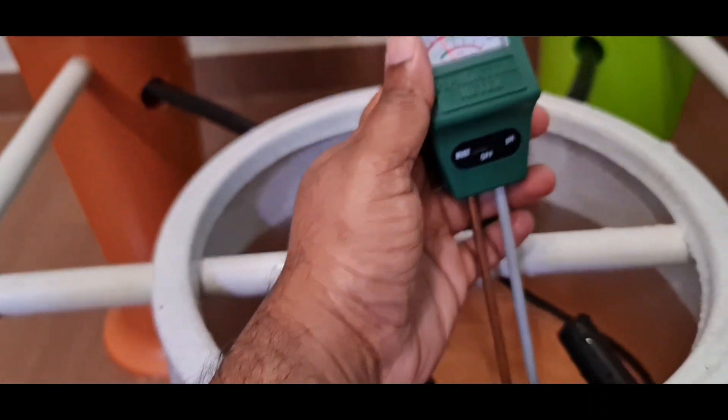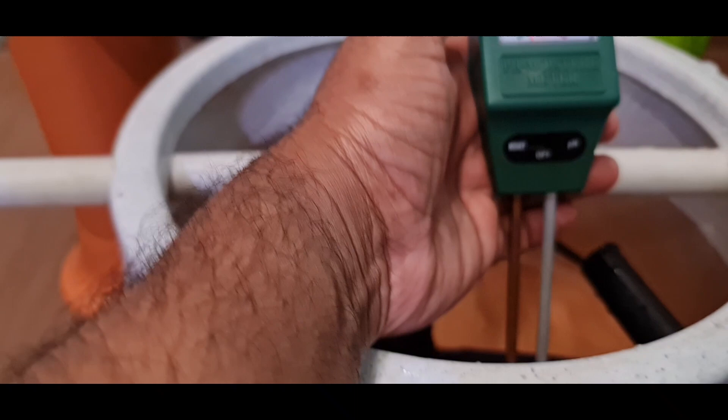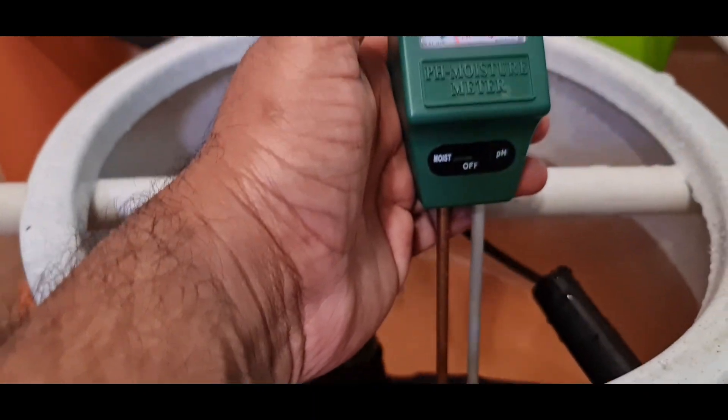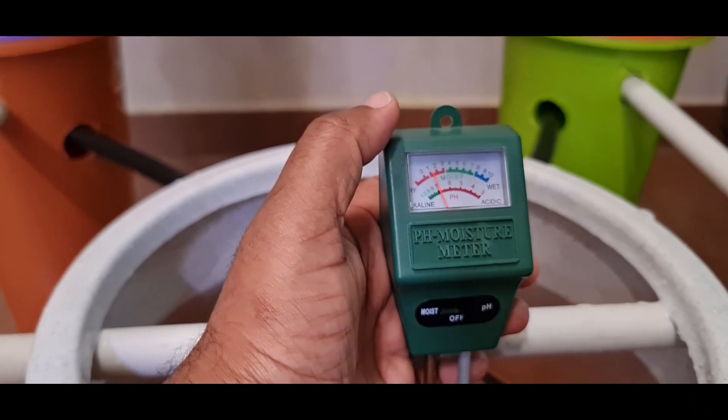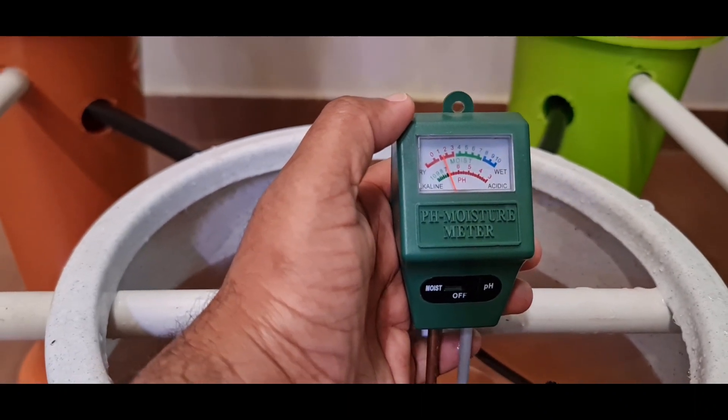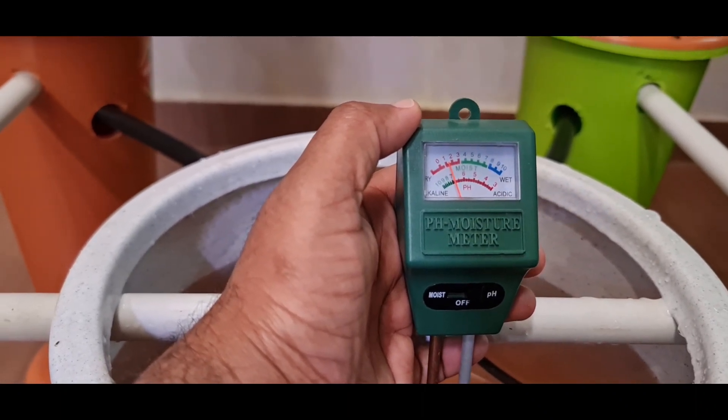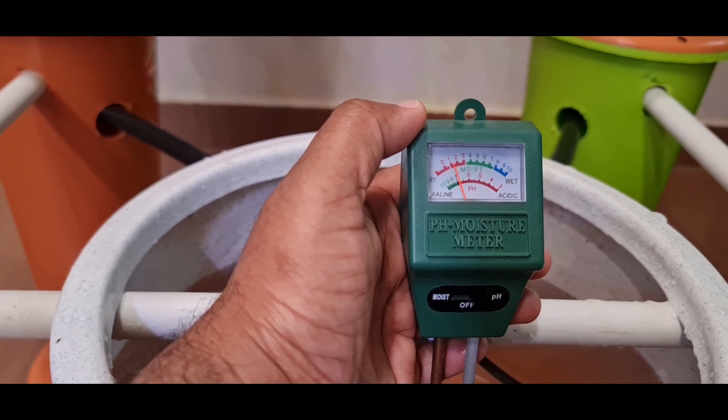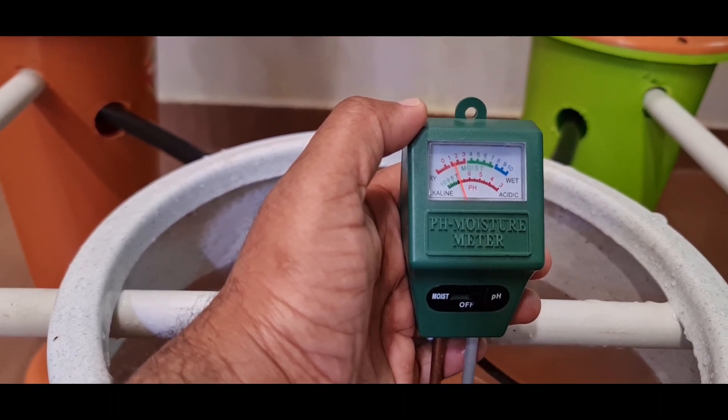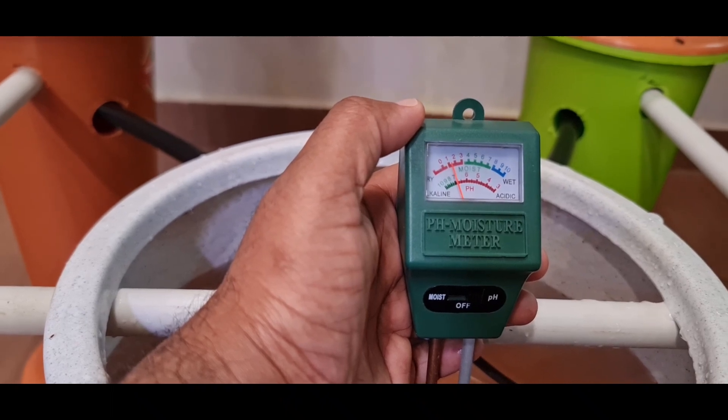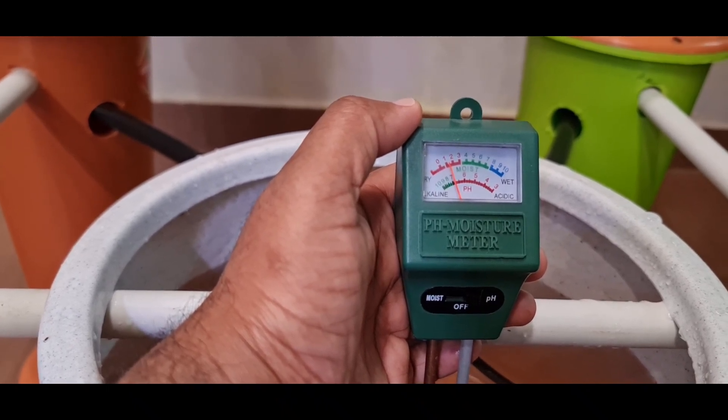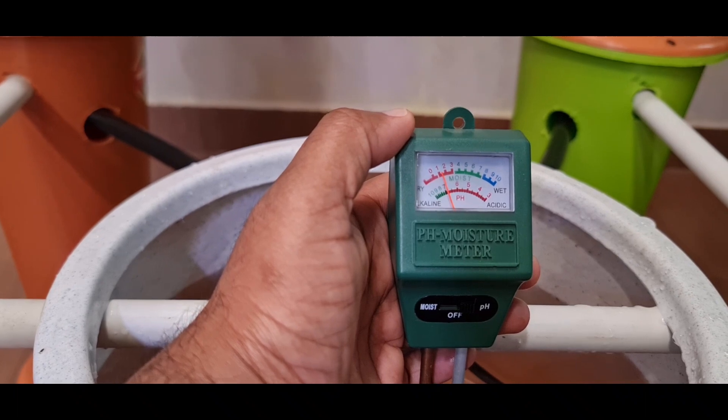Now, let us see what has happened to the pH. The pH of this solution is still showing 7. That means you have to add some pH down solution to this nutrient fluid in order to make it acidic. Either you can use vinegar or pH down solution available online.